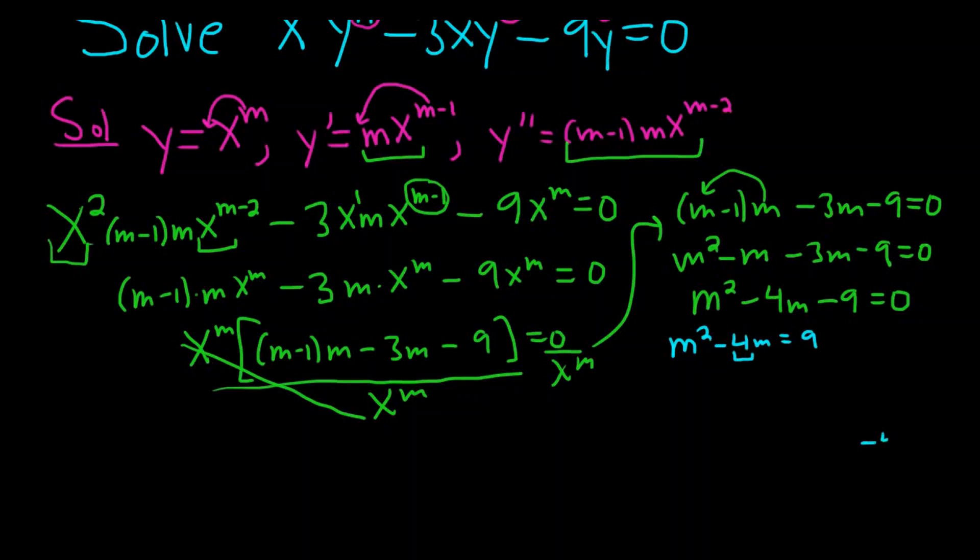So again, negative 4 over 2 is negative 2. And when you square that, you get 4. So we'll add 4 to both sides. So we get m squared minus 4m plus 4 equals 13.